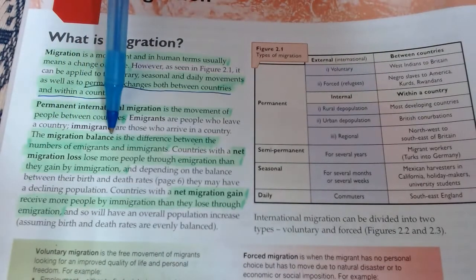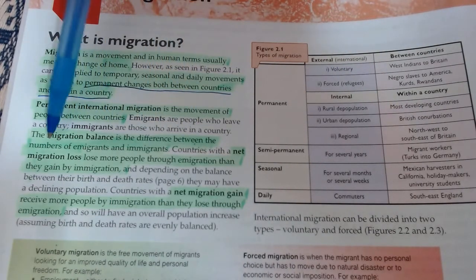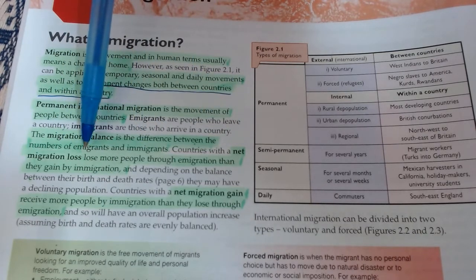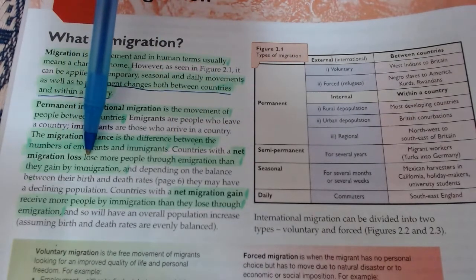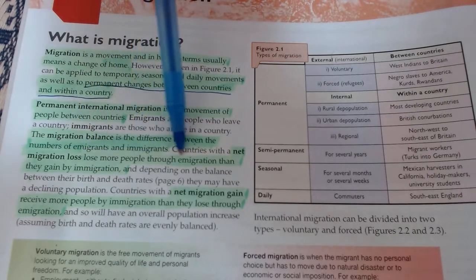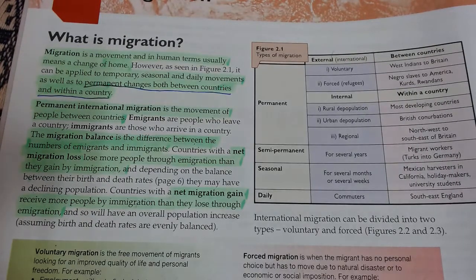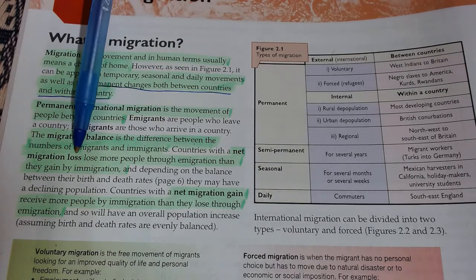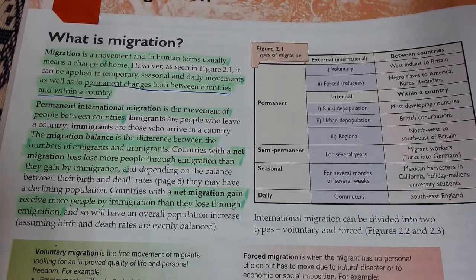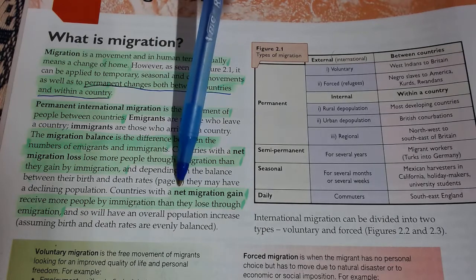The migration balance is the difference between the numbers of emigrants and immigrants. Countries with a net migration loss lose more people through emigration than they gain by immigration. So a country will have people leaving — emigrants — and people coming in — immigrants — each year. If you have more people leaving than coming in, you have a migration loss and your population will go down.